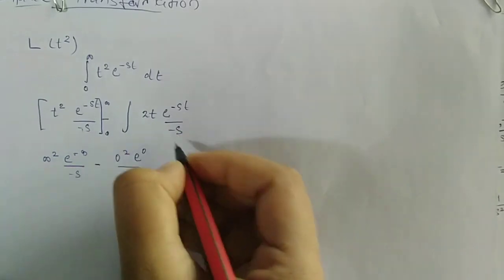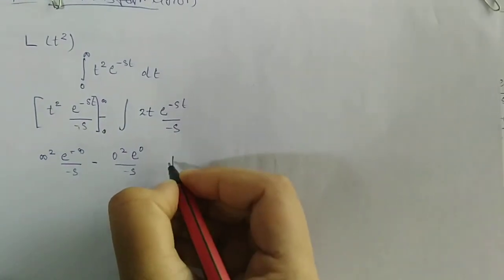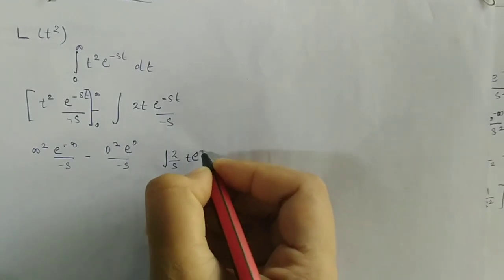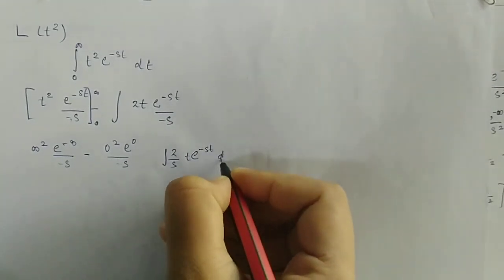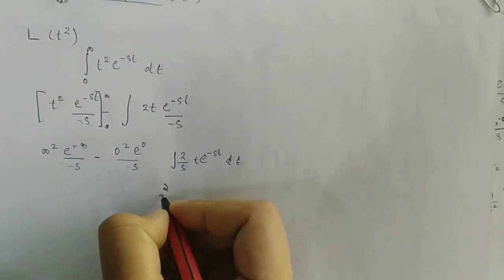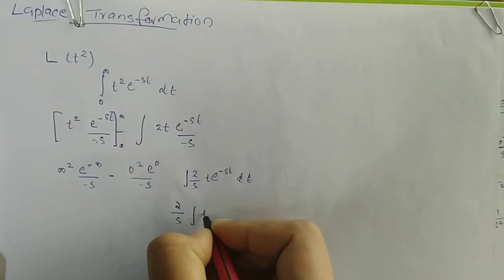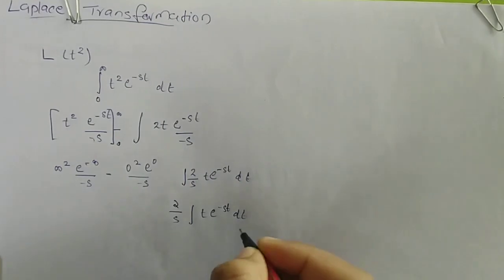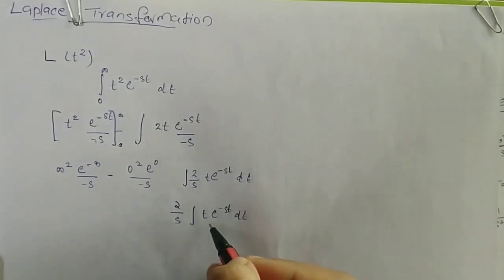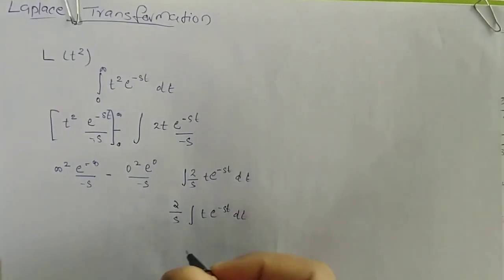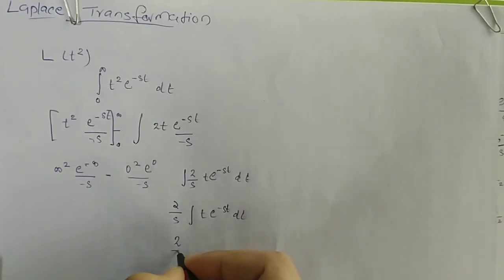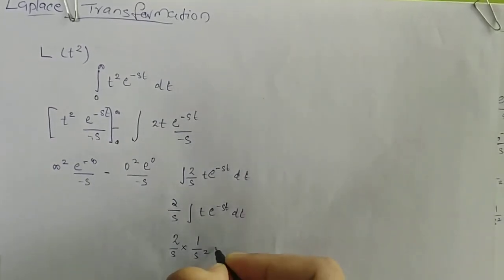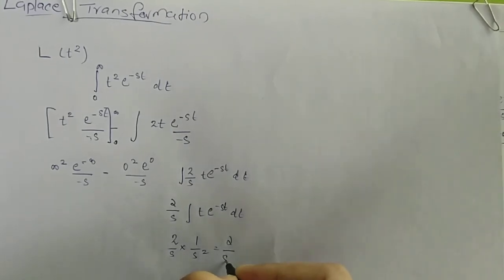After evaluating the boundary terms (which cancel to zero), we get minus minus plus, giving us 2 by s times the integral of t e raised to minus st dt. This integral is the Laplace transform of t, which equals 1 by s squared. So we have 2 by s into 1 by s squared.